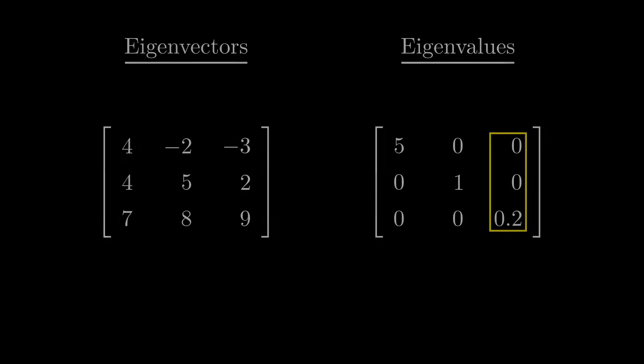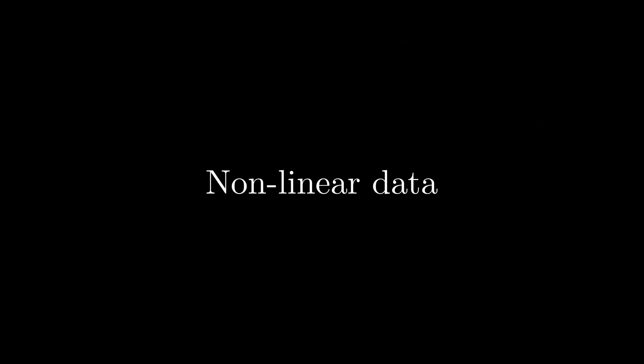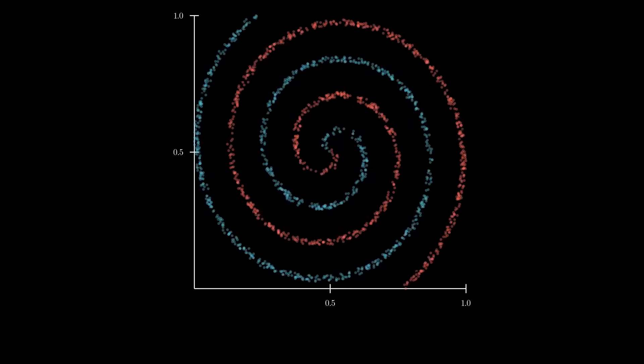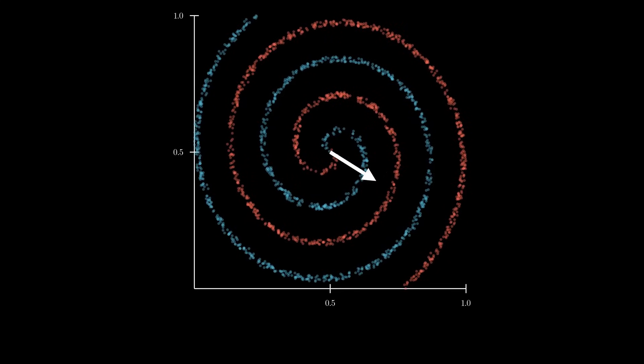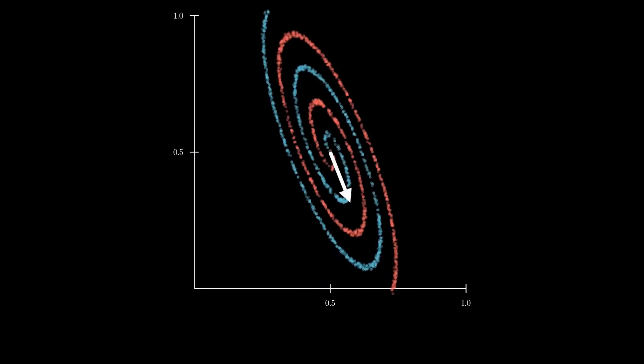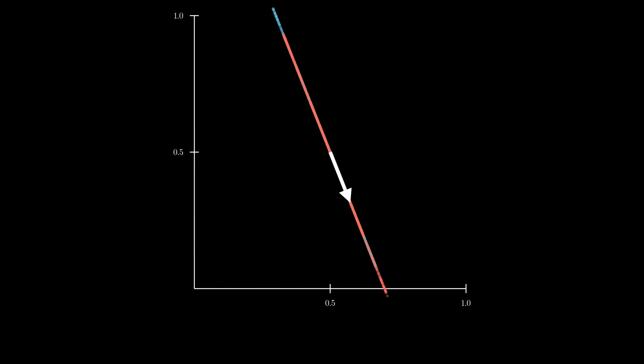However, there is one thing that PCA struggles with. It doesn't work well with nonlinear data because it relies on linear projections. Take spiral-shaped data, for example. PCA struggles to separate such data into distinct clusters effectively. The problem is not the direction of projection, but the fact that we are using a linear operation at all, whereas the relationship between the data is nonlinear.